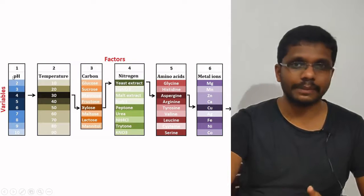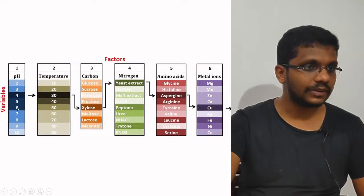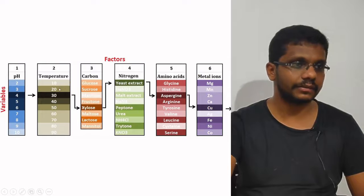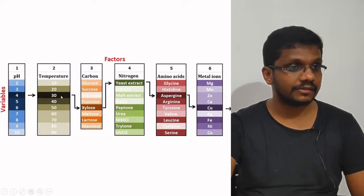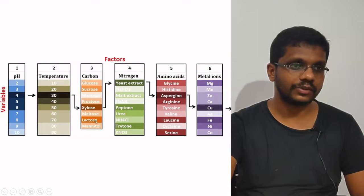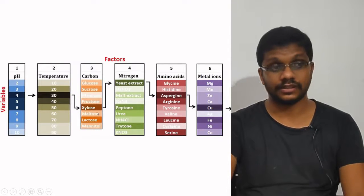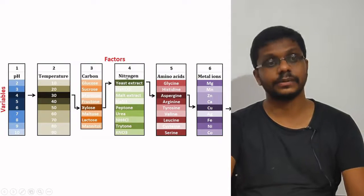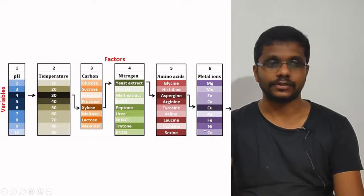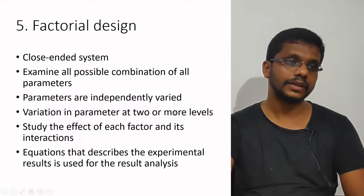To illustrate the one factor at a time design: in the first experiment, we change only pH from 2 to 10 and find that 4 is the best. In the next experiment, we fix all other parameters and vary temperature from 10 to 90 degrees, finding that 30 is the best. Then we try different carbon sources — glucose, sucrose, mannose, fructose, xylose, maltose — and find that xylose is the best. Then we try different nitrogen sources, then amino acids, then metal ions. In every set of experiments, we change only one parameter, and finally we arrive at a high-producing medium.